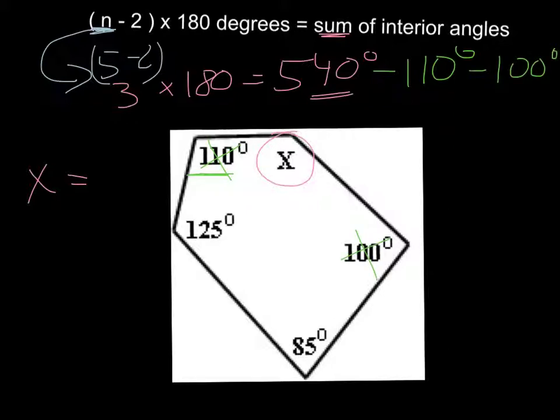That would be 330. Then take away 125. So minus 125. That would be 205. Then take away 85. So minus 85.